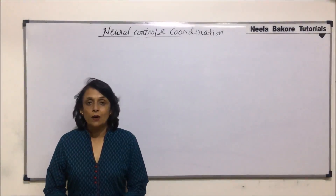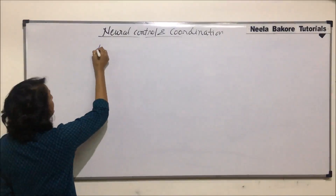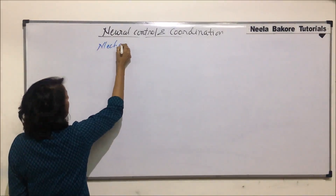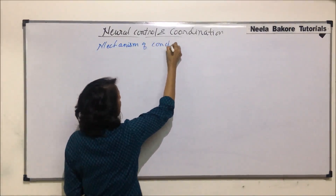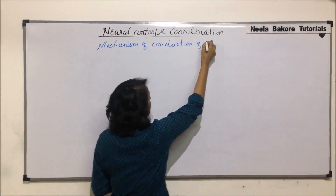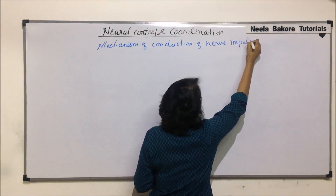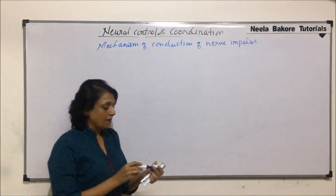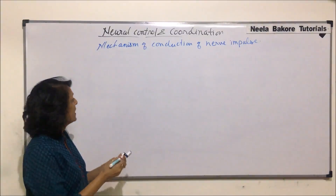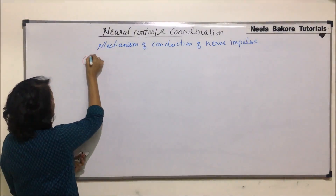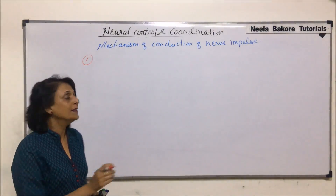In this section, we'll talk about the mechanism of conduction of nerve impulse. There are various steps involved and we'll take all of those steps one by one. The first step is generation of the impulse.